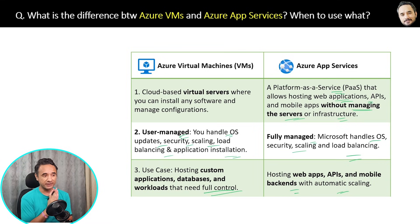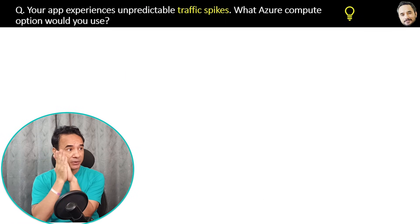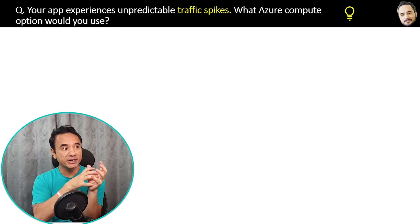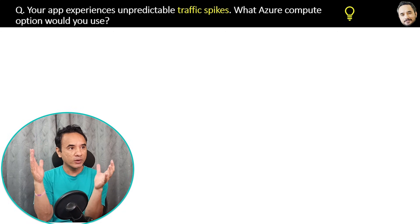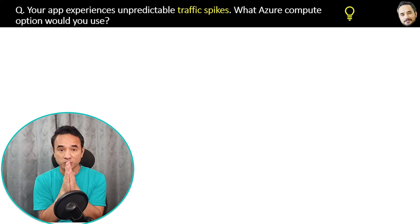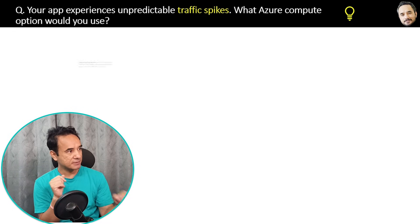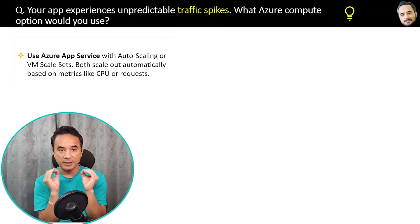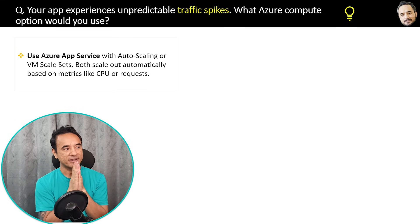Scenario question: your application has unpredictable traffic with spikes from users — what Azure compute option would you use? Think about it. The answer is: use Azure App Service with auto-scaling, or VM Scale Sets — not plain virtual machines. Both scale out automatically based on metrics like CPU usage or request count.